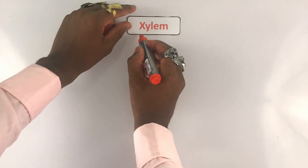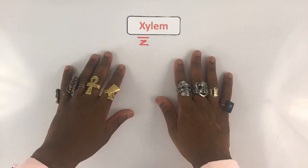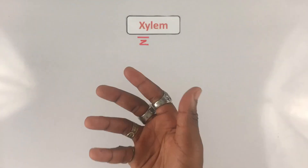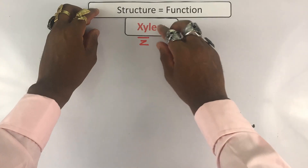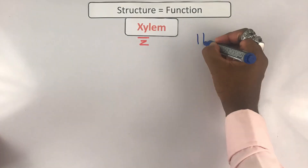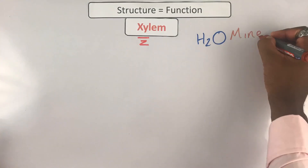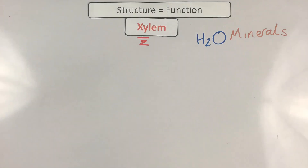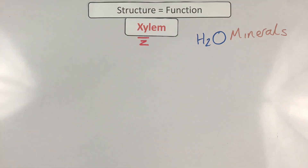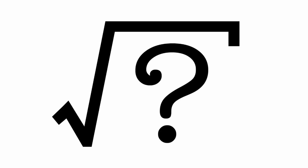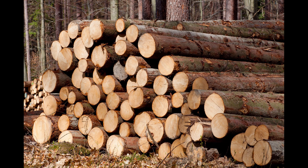The next specialized plant cell we're going to look at is the xylem cell. Note that the 'xy' is pronounced like 'z,' so: xylem cell. Once again, the structure is related to the function, and the function of xylem cells is to carry water and minerals from the roots to the rest of the plant above. Fun fact: the root word of 'xylem' comes from the Greek word for wood.